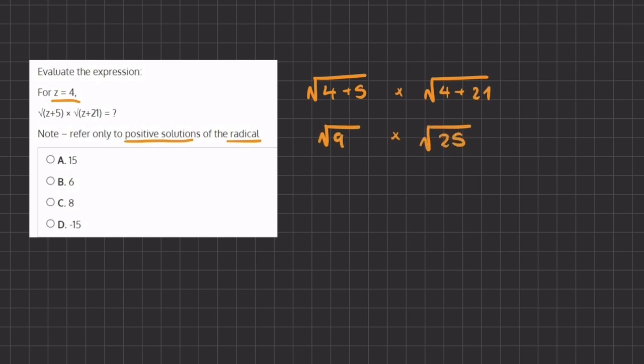Now radical 9 turns into 3, and radical 25 turns into 5. Meaning that our final answer will be 3 times 5, which will give us 15. That will be answer A.